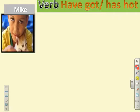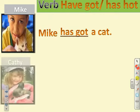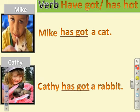Now look at that picture. This boy is Mike. Has Mike got a cat? Yes, sure — Mike has got a cat. Look at the next picture. This girl is Kathy. Has Kathy got a rabbit? Yes, Kathy has got a rabbit.